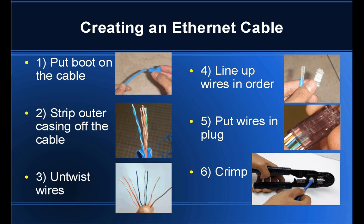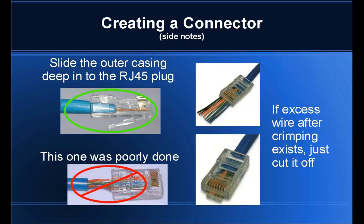A few side notes when creating a connector: first and foremost, you want to make sure that you slide the outer casing of the cable deep into the RJ45 plug itself — you can see the blue going through the plug here. When you crimp it down, it really bites into the outer casing and helps hold those wires in place. This way, when the wire ever twists, bends, or gets tugged on, a lot of that pressure gets applied to the outer casing itself and not the wires connected to your pins.